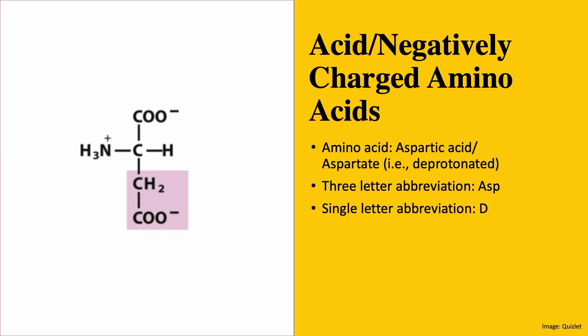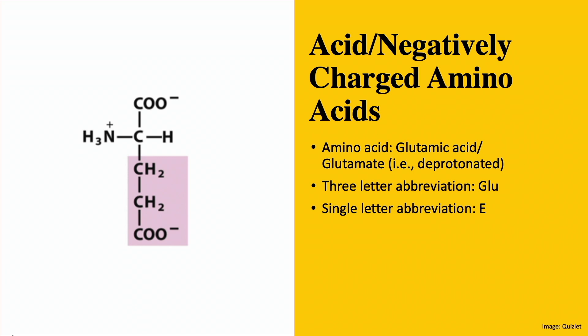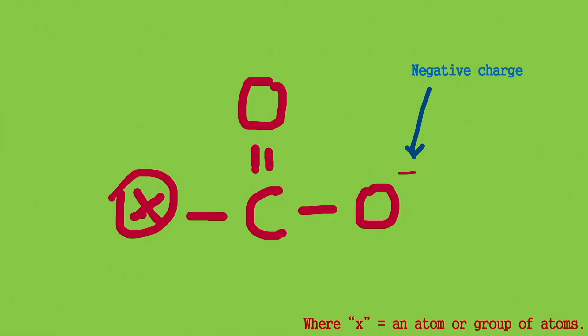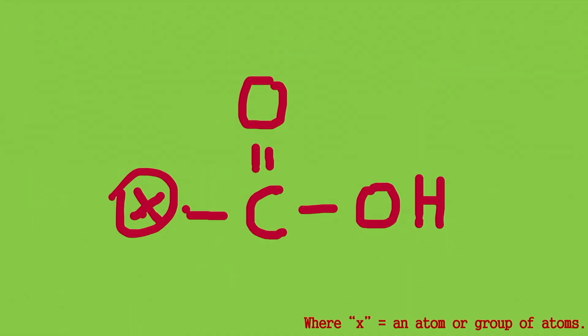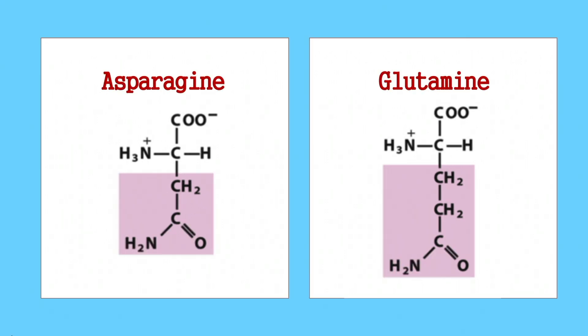Similar to asparagine and glutamine, the structures of aspartate and glutamate are easy to remember — in fact, the way they differ is exactly the same. The R group of aspartate contains a carbon atom attached to a carboxylate. A carboxylate is a carbon atom double bonded to an oxygen atom and single bonded to an oxygen that has already lost its hydrogen atom, so it's a COO⁻ group — basically a deprotonated version of a carboxylic acid. The structure of glutamate is exactly the same, but with two carbon atoms between the alpha carbon and the carboxylate, as opposed to one carbon like in aspartate.